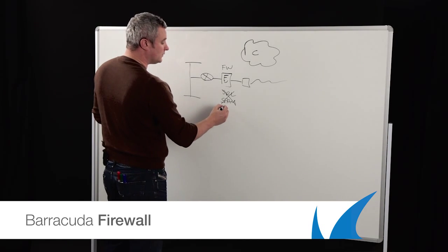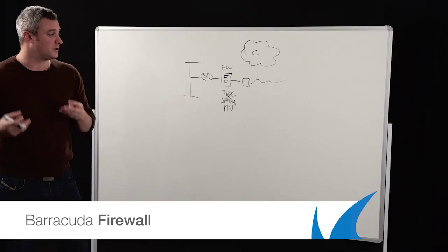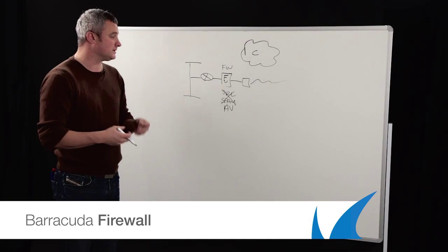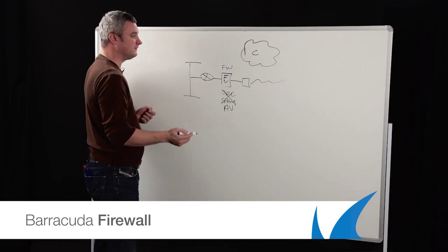Traditional UTM firewalls as well would also have some form of AV in it. And AV, as most people know, is quite process intensive. It eats up a lot of CPU cycles, a lot of memory cycles. It slows down your firewall doing what it should do and performing efficiently.